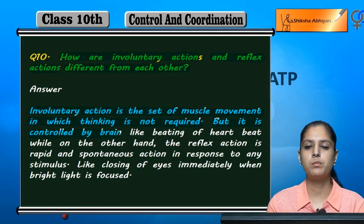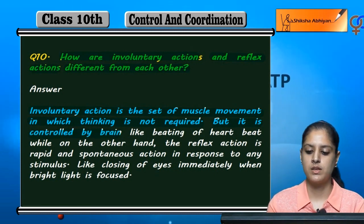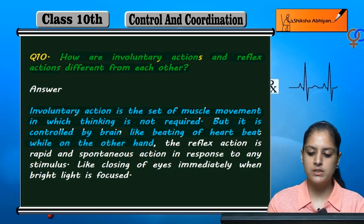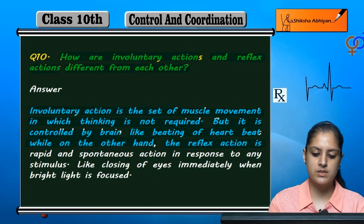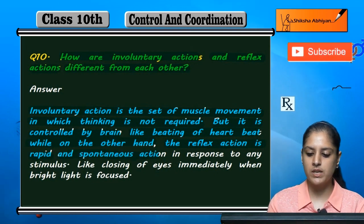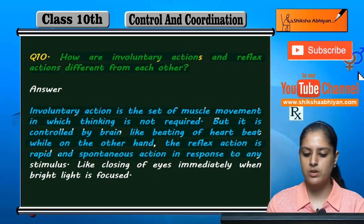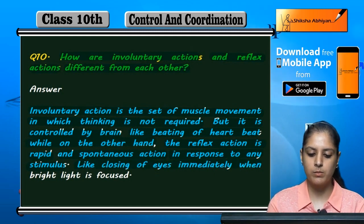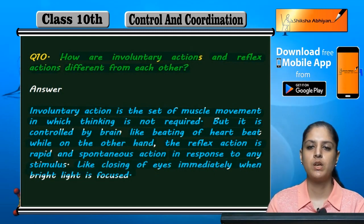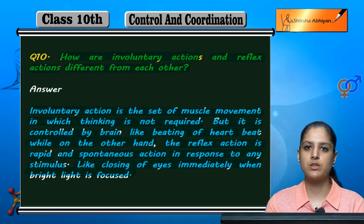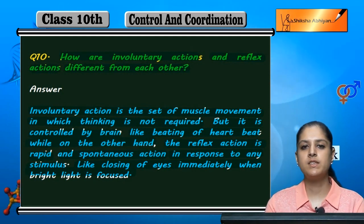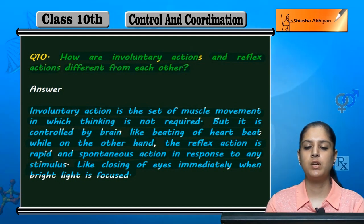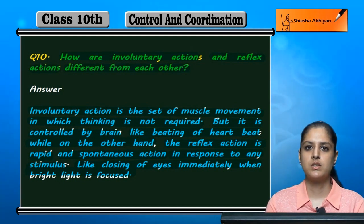Involuntary actions are controlled by the brain. For example, the beating of the heart and breathing — these happen continuously due to brain control, and other such things.